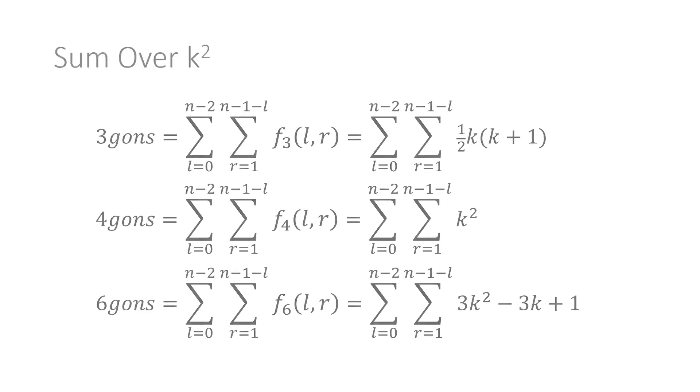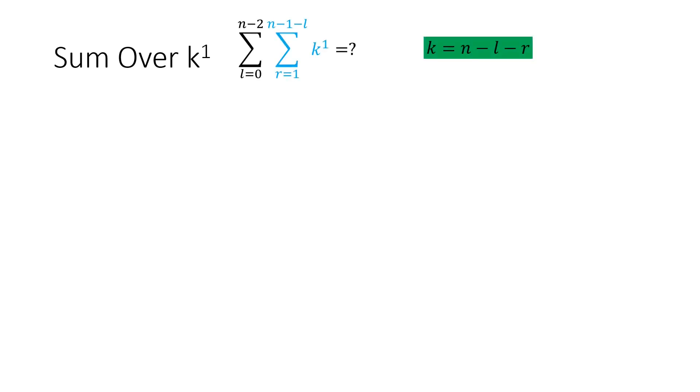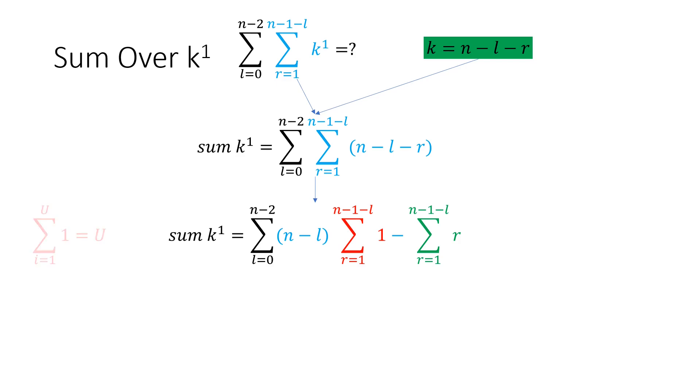The double sum over K squared is easy. We already found it in part 1. Done. For the sum over K, sub in N minus L minus R. Now separate into two terms for the two powers of index R. R to the 0, or 1, in red, and R in green, while commuting out constants. But again, the sum over 1 U times is U. And the sum over the index I U times is the Uth triangular number. And then substitute these back in.